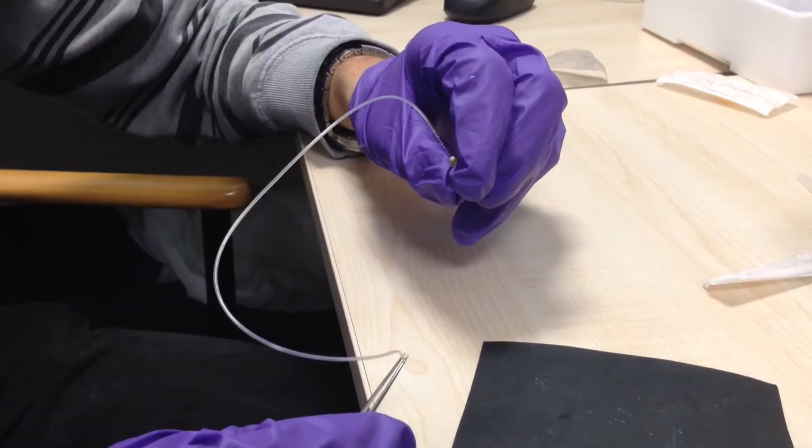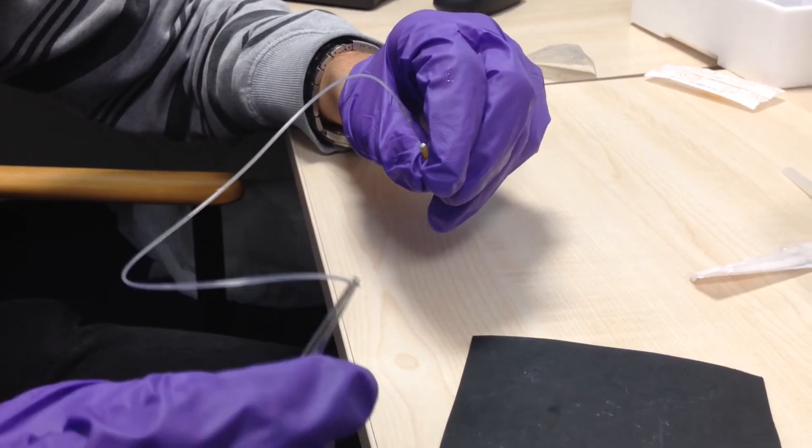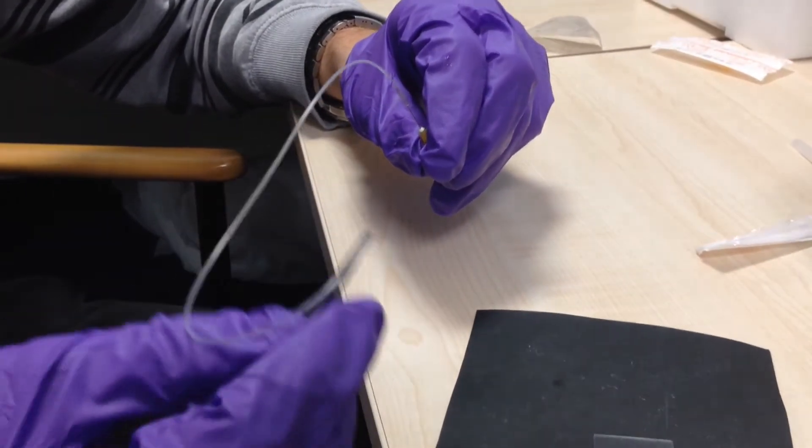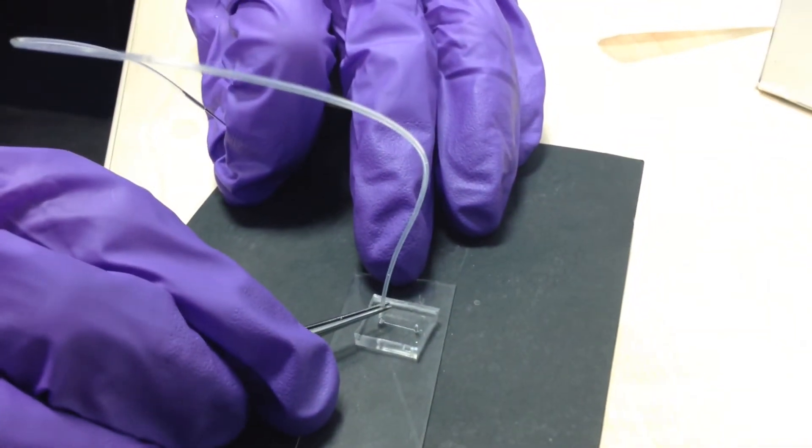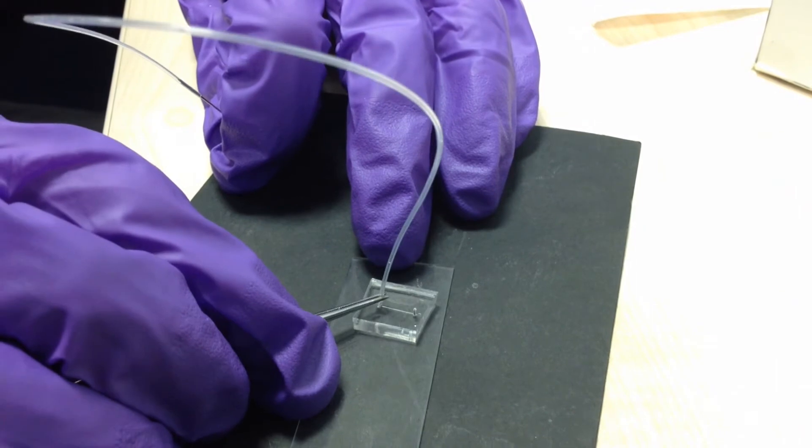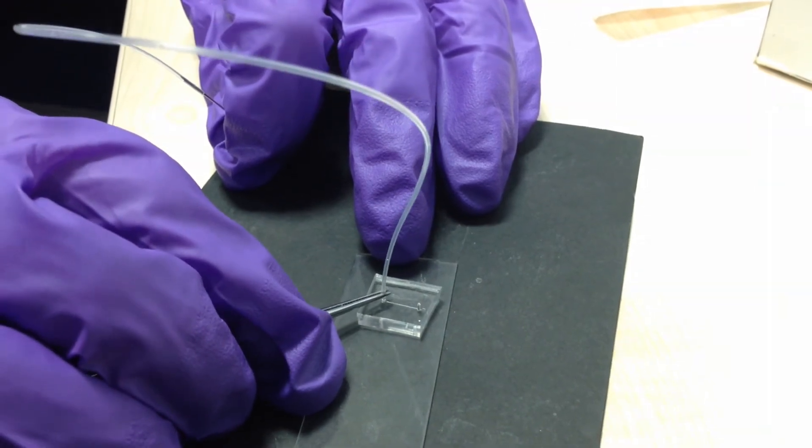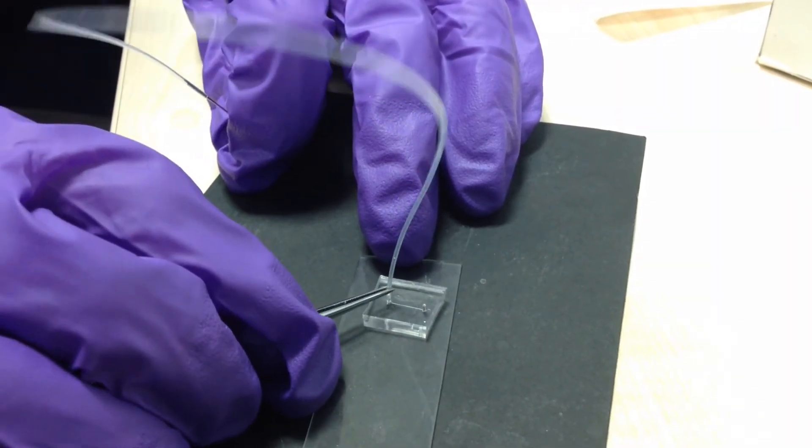Once you've attached the needle to the tubing, attach the other end of the tubing to the microfluidic device. Just take a pair of tweezers and gently push the tubing into the hole in the device. You can give it a quick wiggle to make sure it's in properly.